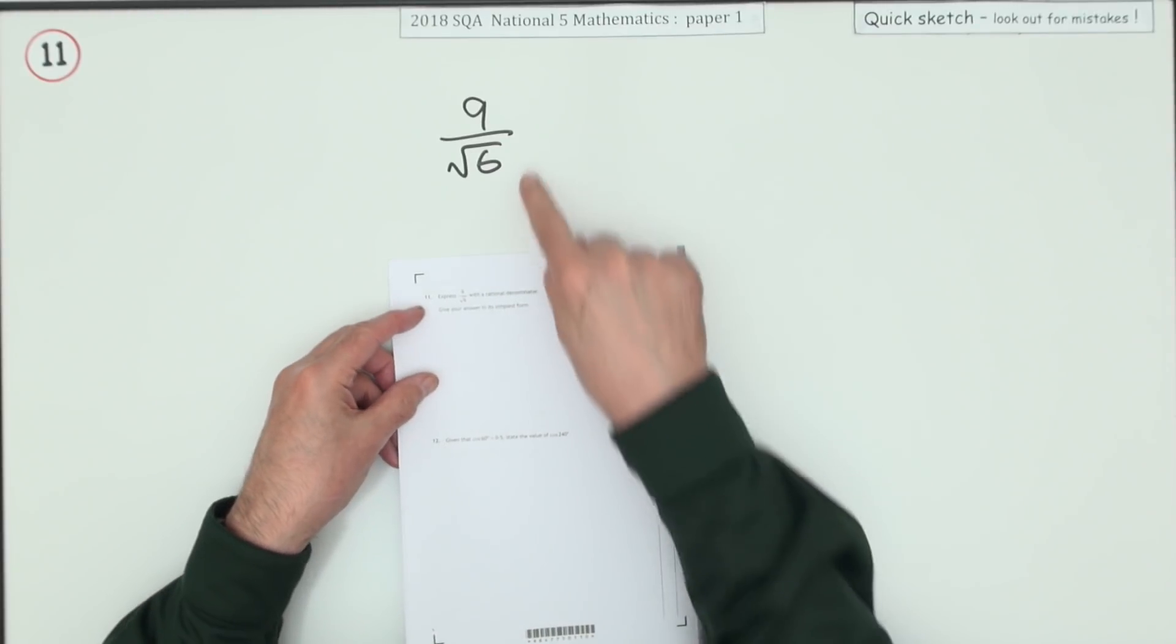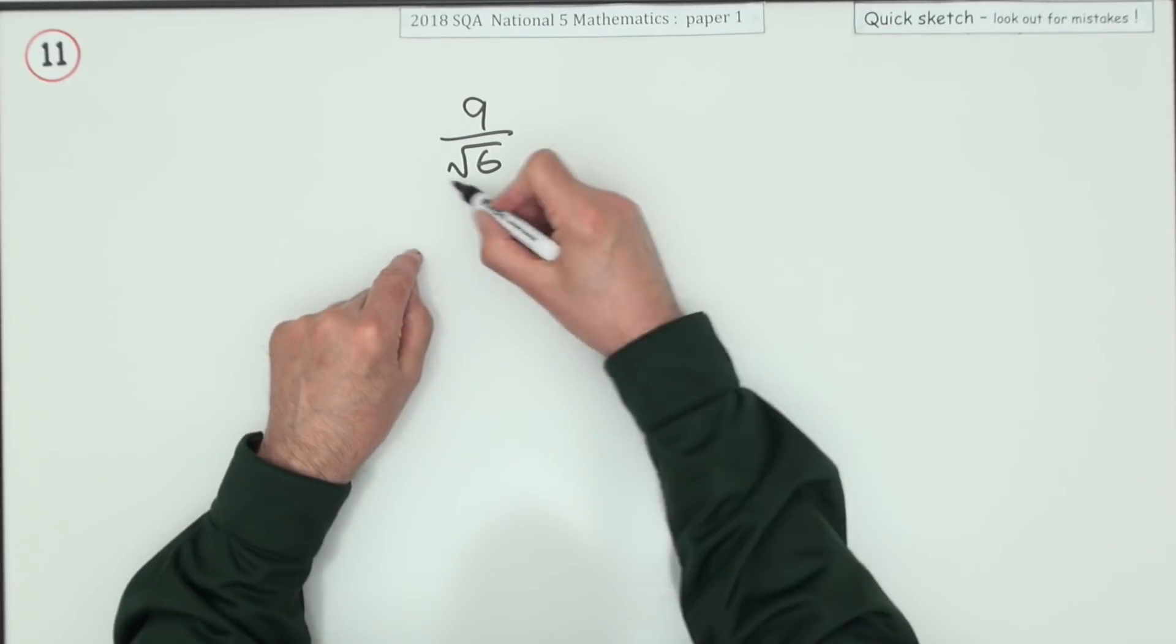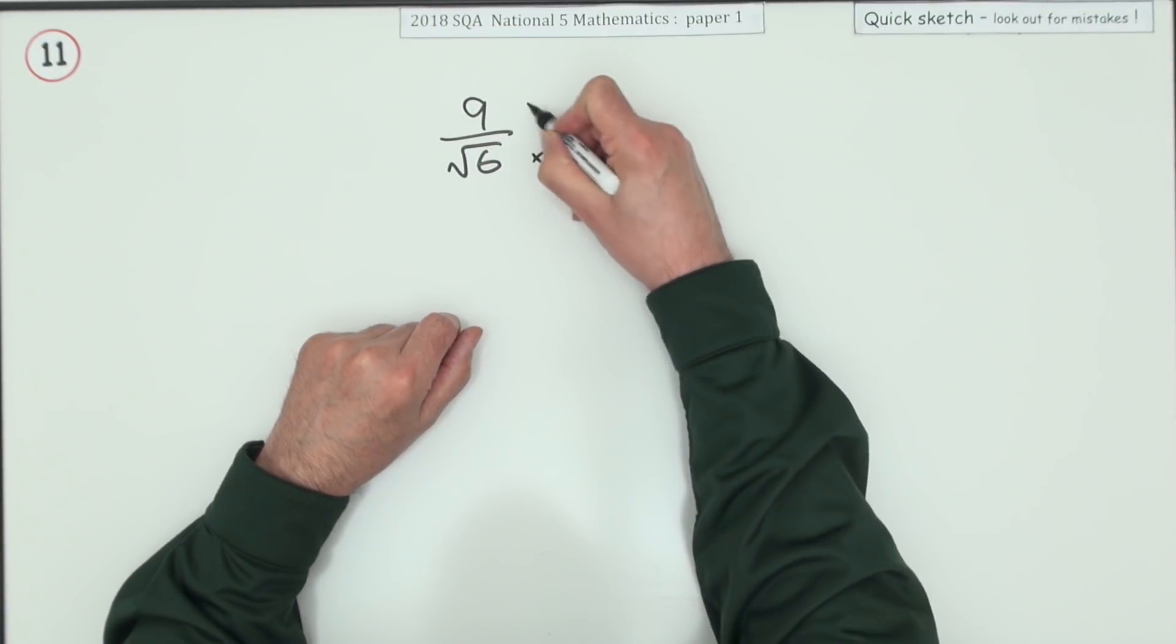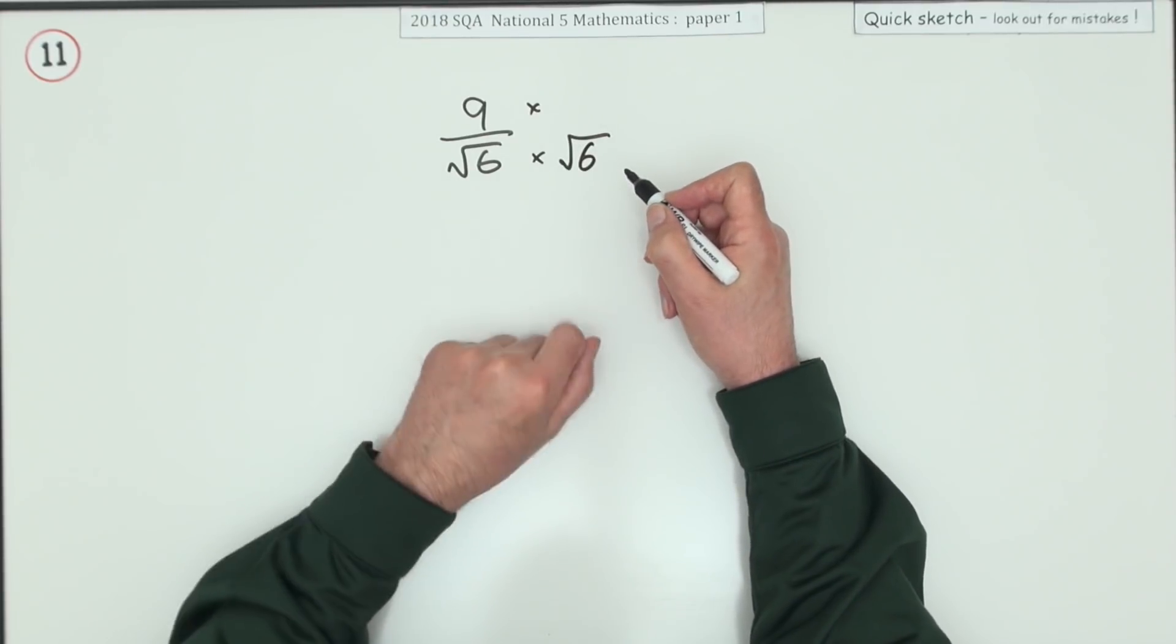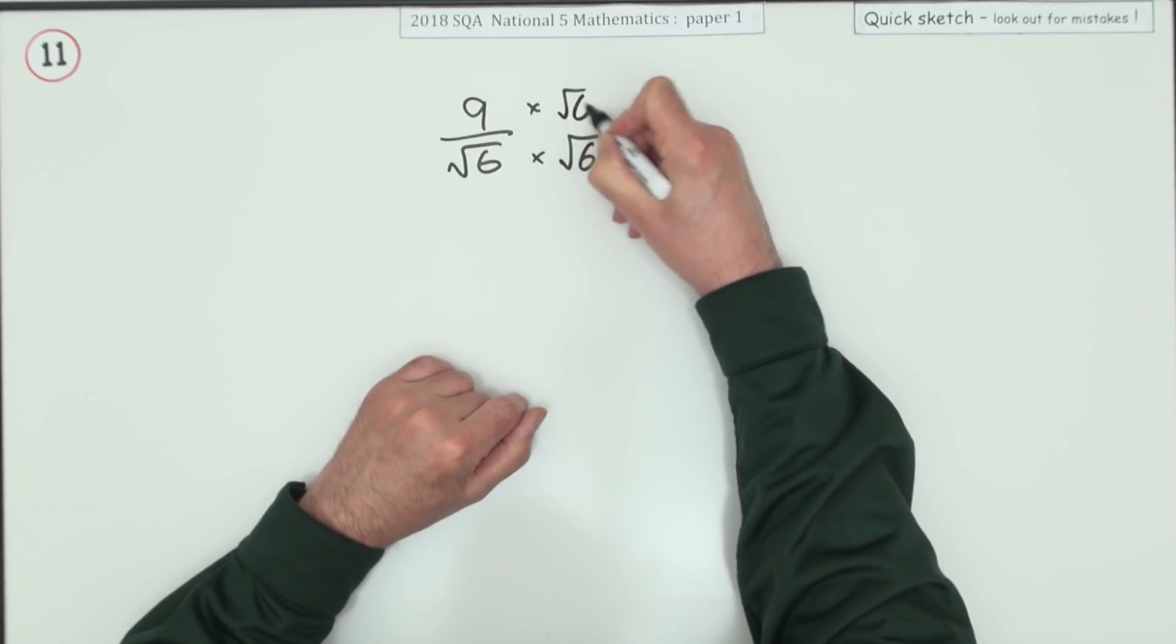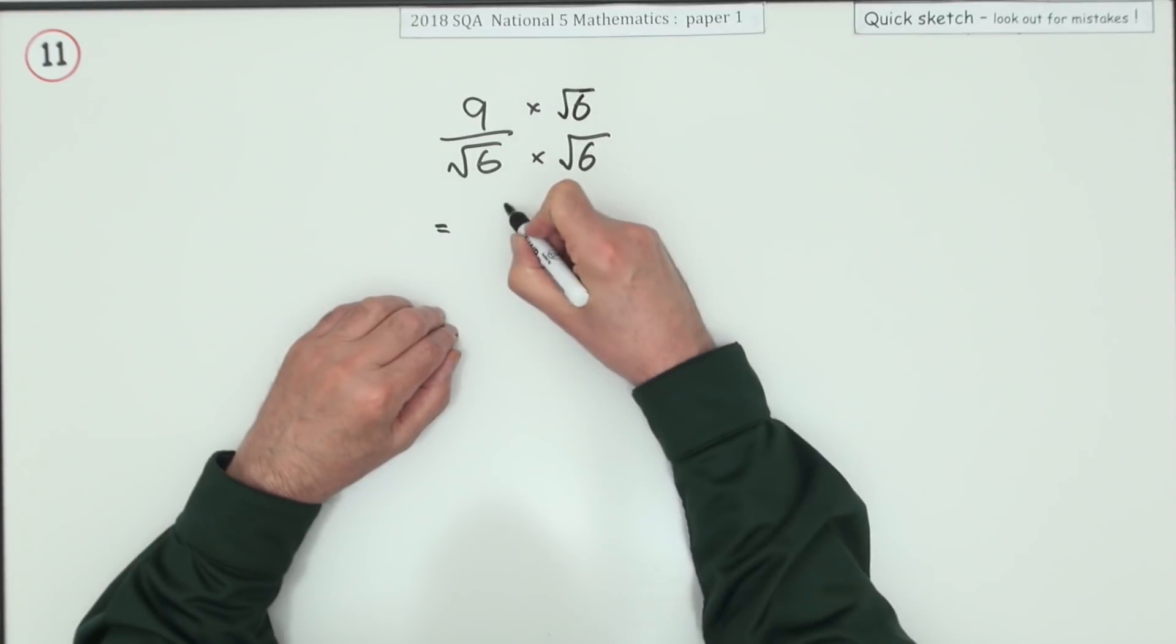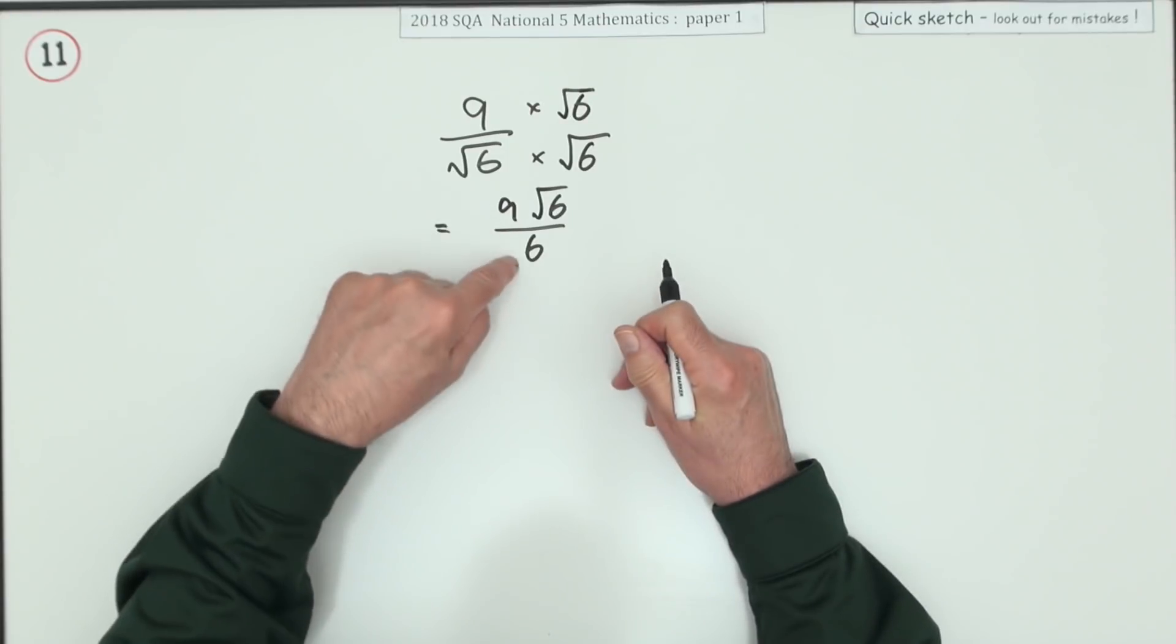Number 11. Two marks. Express this fraction with a rational denominator. Give your answer in the simplest form. The problem here with the root 6 is it's not a rational number. The way to get rid of that is to multiply by itself. The square root times the square root will reconstitute the 6 and make the denominator rational, but it won't go away because if you multiply the denominator, you'll also have to multiply the numerator to keep it balanced. So now you've got 9 root 6 over 6.